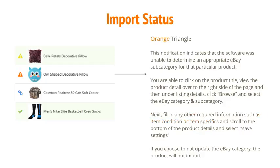The orange triangle notification indicates that the software was unable to determine an appropriate eBay subcategory for that particular product. You are able to click on the product title, view the product detail on the right side of the page, and then under listing details, click browse and select the eBay category and subcategory. Fill in any other required information such as item condition or item specifics, and scroll to the bottom of the product details and select save settings. If you choose not to update the eBay category, the product will not import.